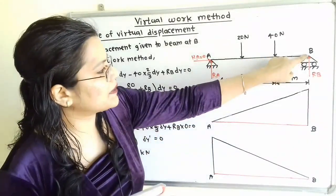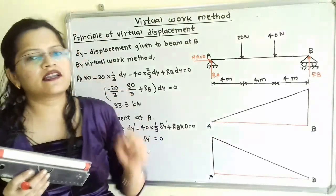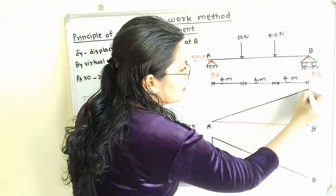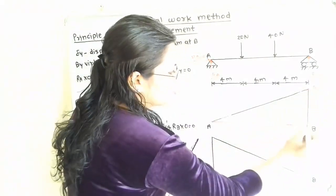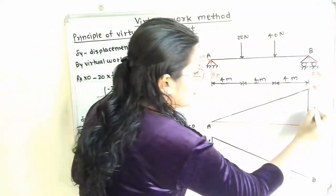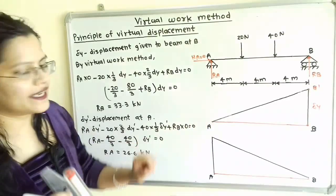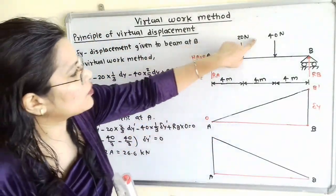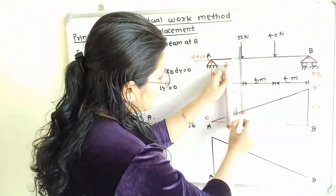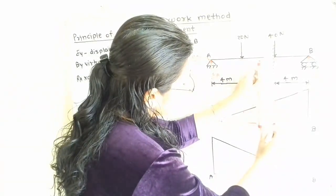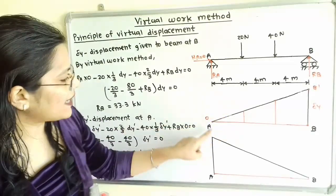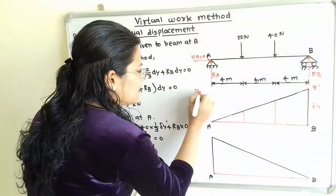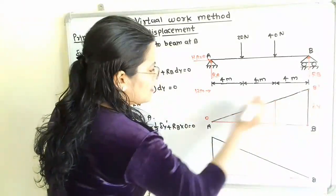When we give a very small displacement at end B in the vertical direction, we will call it delta Y. This is the original position of B, and here is the final position B'. This small displacement is given as delta Y. At end A, it remains at its original position, so displacement there is 0. We now have to find the displacements at the locations of the 20 N and 40 N forces. From A to B, the total distance is 4 plus 4 plus 4, that is 12 meters, and the displacement given at B is delta Y.